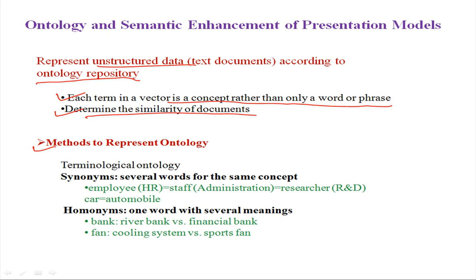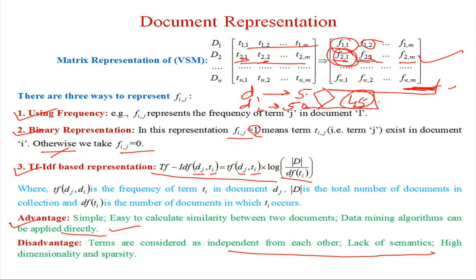The first type is terminological ontology — using synonyms, meaning several words for the same concept, like 'employee', 'staff', 'researcher', or 'car' and 'automobile'. Also homonyms — one word with several meanings, like 'bank', which could be a river bank or a financial bank, and 'pan', which could mean a cooling system component or a sports term. We can use this information to improve the matrix representation.